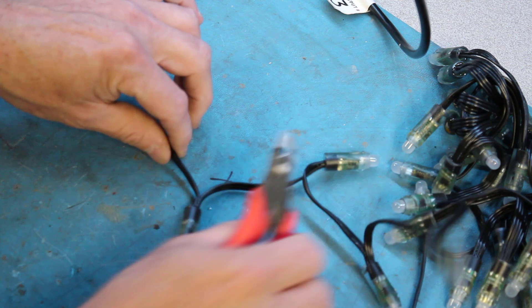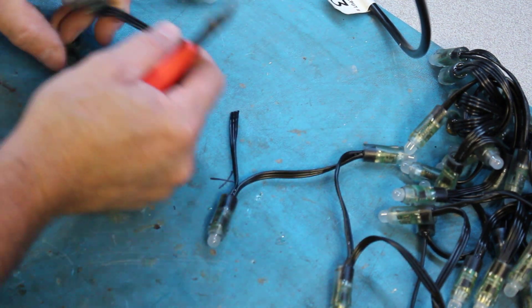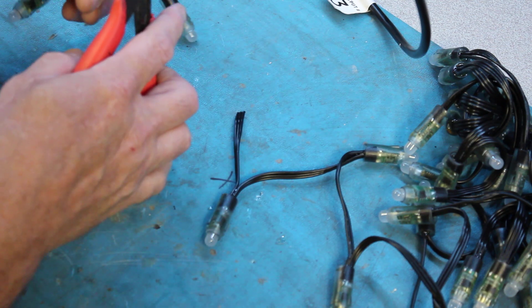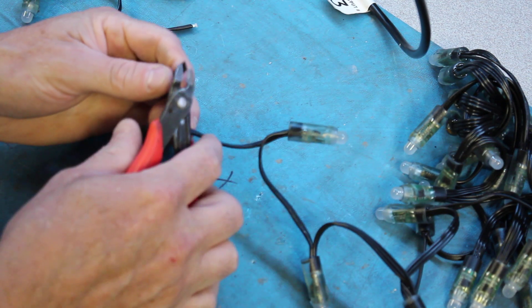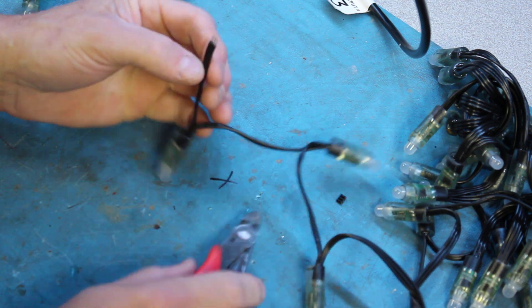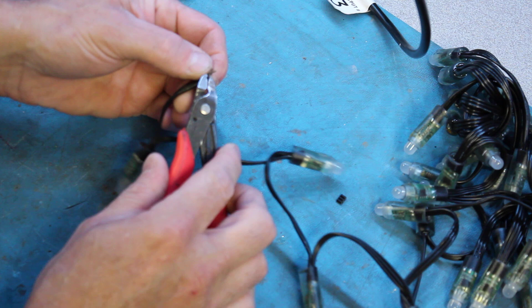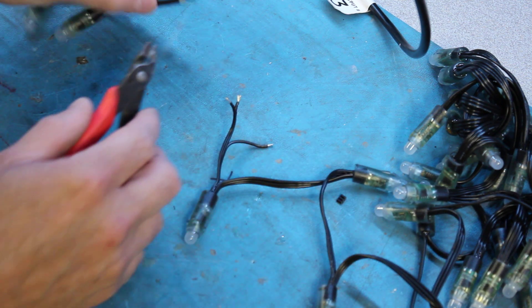So I've cut out the pieces. Now we want to make sure, of course, to make sure that we maintain the direction. All right. Now, I'm going to simply take my dykes here, and I'm just going to cut off approximately an eighth of an inch of the insulation. And I'm simply just going to pull back each wire so we can solder each individual wire.